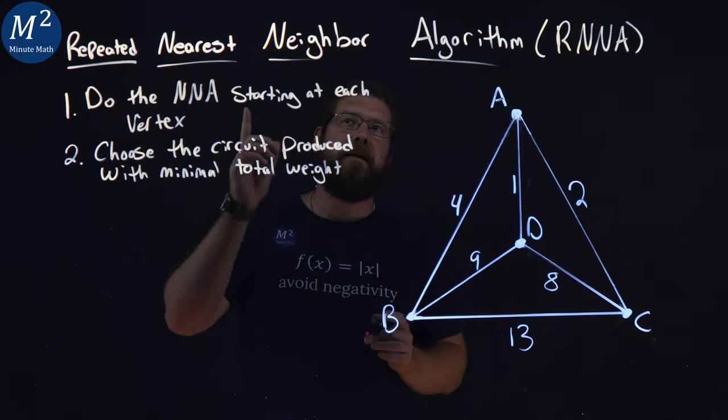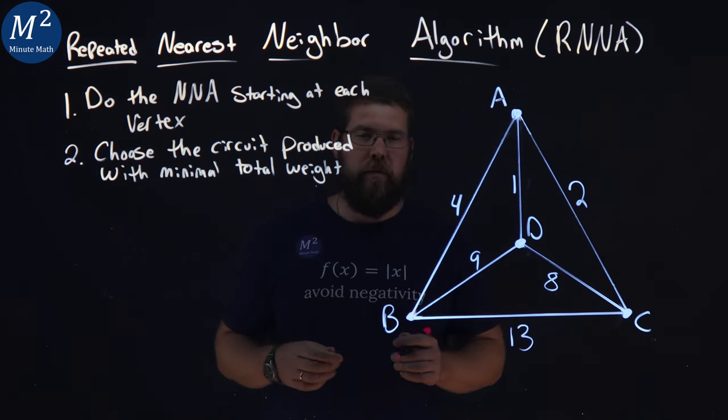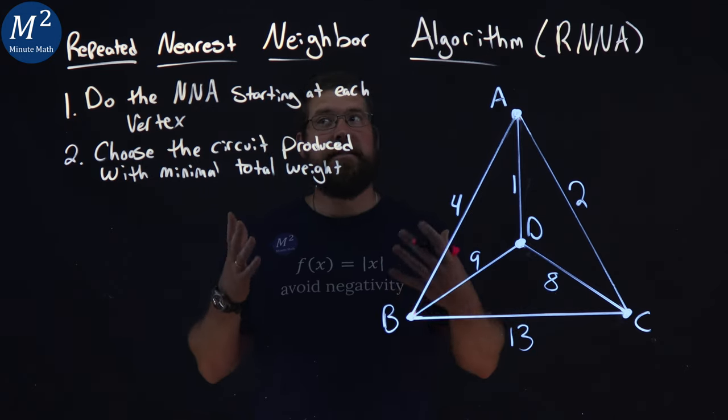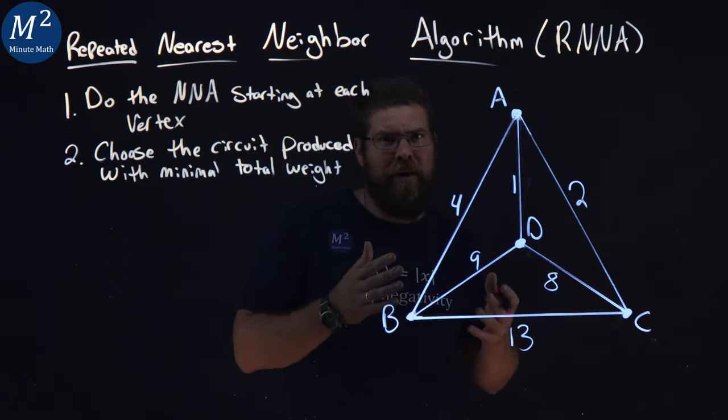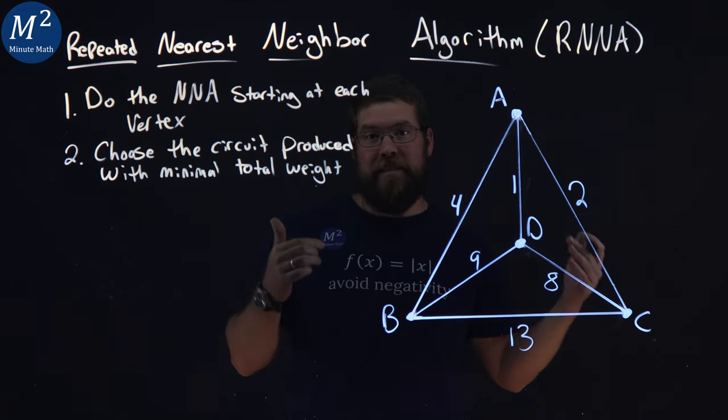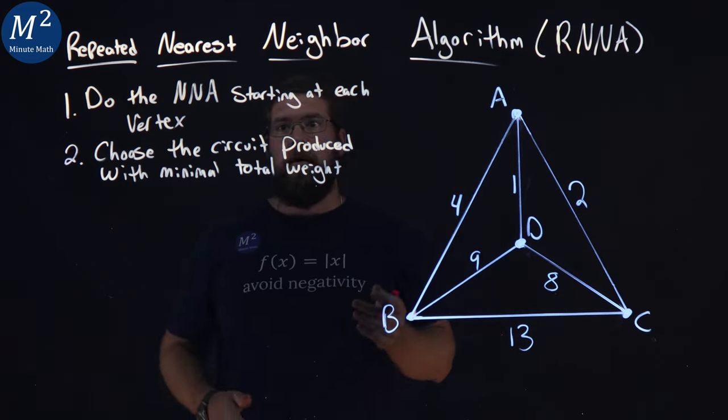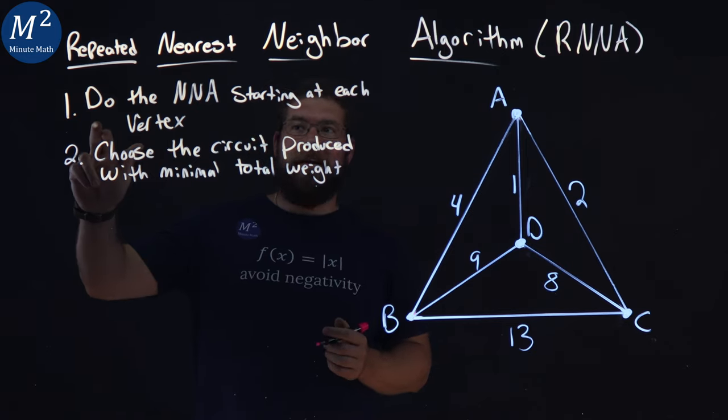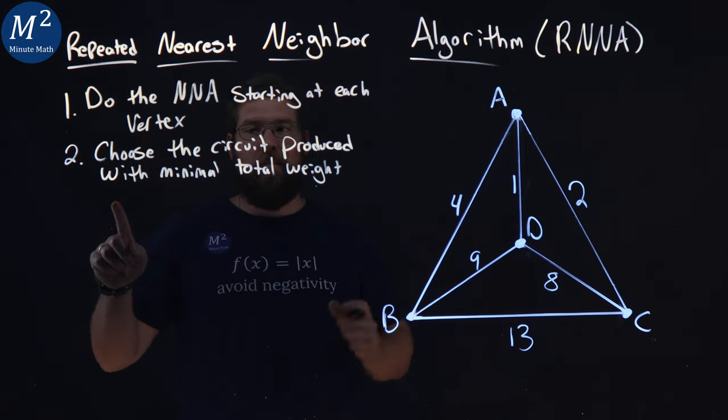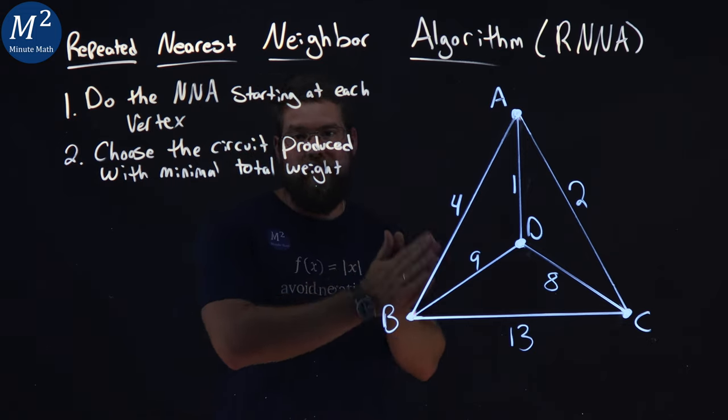Let's learn about the repeated nearest neighbor algorithm. The repeated nearest neighbor algorithm is just like the nearest neighbor algorithm, but we apply that to every single vertex as a starting point. So our steps are: do the nearest neighbor algorithm starting at each vertex, and then choose the circuit produced with the minimal total weight.